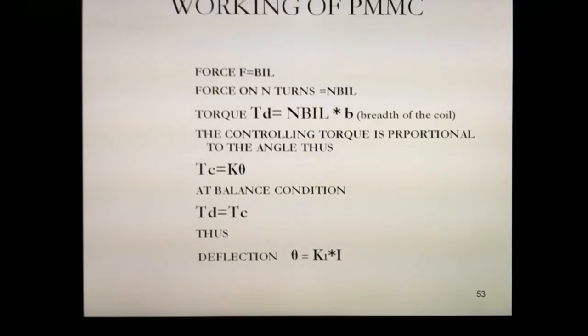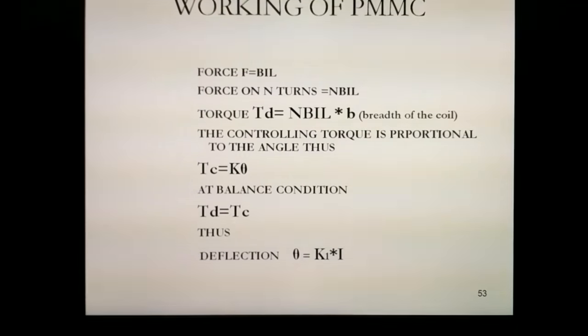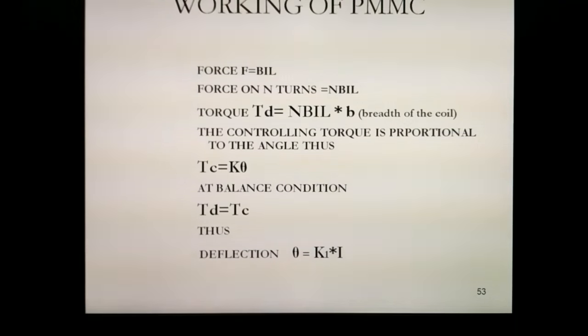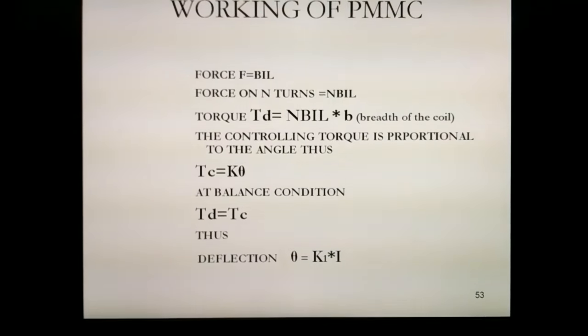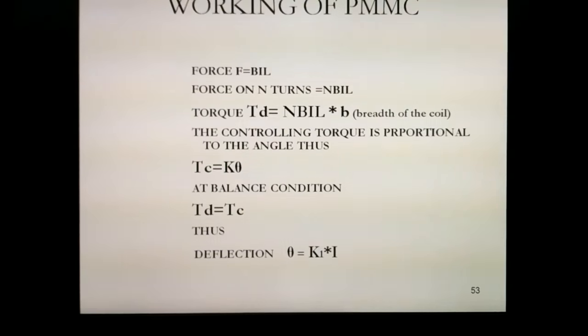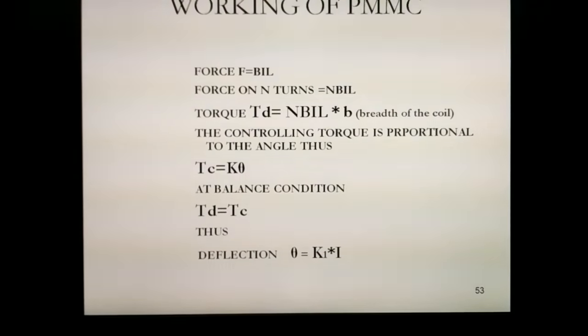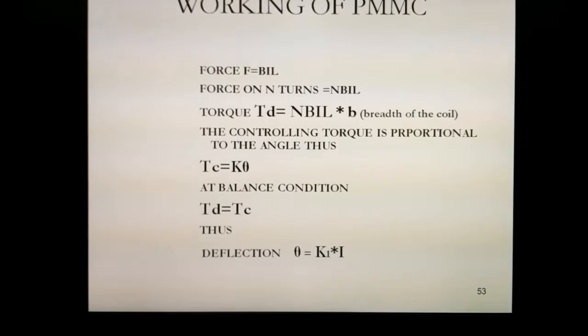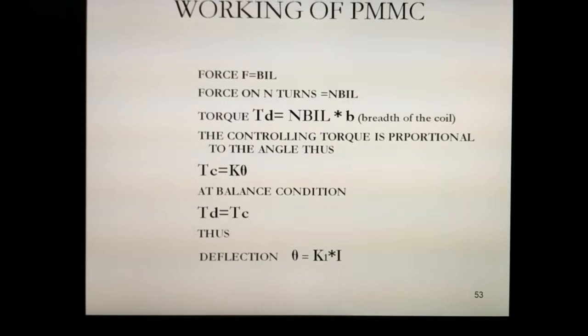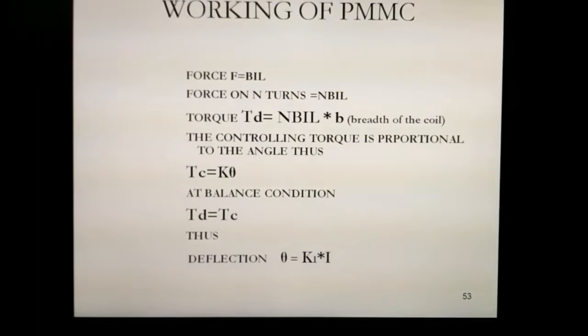The deflecting torque is NBIL times B, where B is the breadth of the coil. The controlling torque is proportional to theta, thus Tc equals K theta, which is applied by the spring.